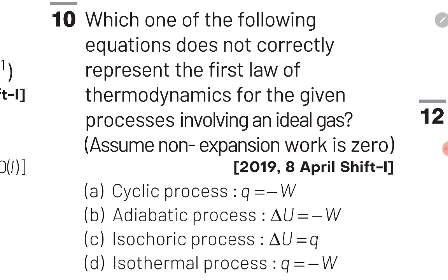The fourth question asks which equation does NOT correctly represent the first law of thermodynamics for the given processes involving an ideal gas. For option A, a cyclic process: since internal energy is a state function and the initial state equals the final state, ΔU = 0. So the first law gives 0 = Q + W, hence Q = −W. Option A is a correct representation.